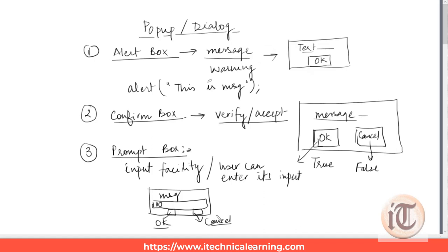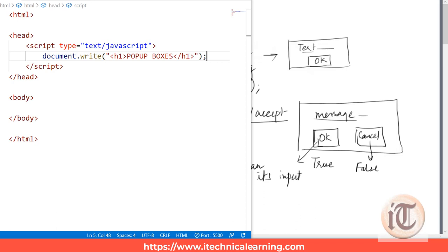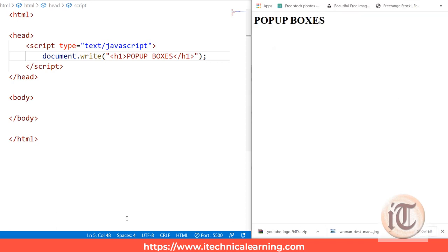So these are the three major dialogue boxes that JavaScript supports for interactivity with the user. Now let's take a practical look at these boxes. First, we'll look at the alert box and how it works.